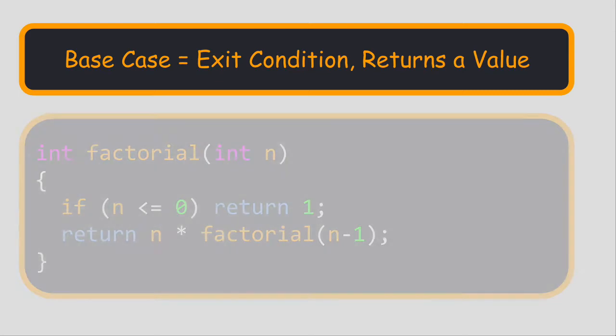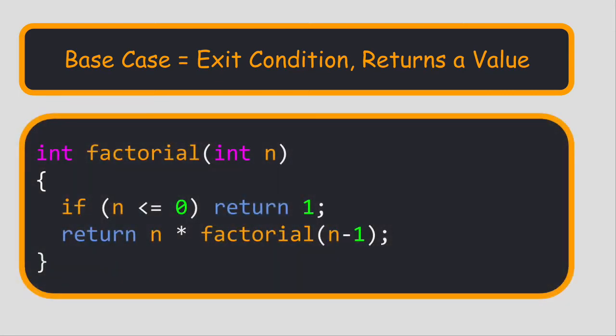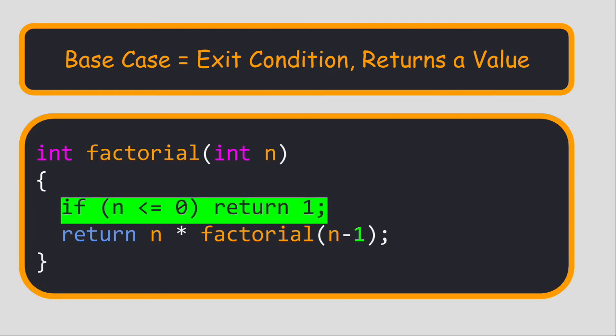Every recursive function requires an exit condition. Otherwise, the function would run forever. We call the exit condition the base case. When the base case evaluates to true, the function will return an actual value instead of calling itself.